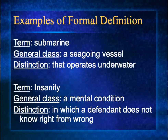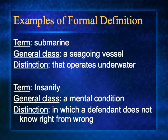Some examples of formal definition: the term is submarine, the class is a seagoing vessel, and the distinction is that it operates underwater. There's also the term insanity, which is a mental condition — that's its classification — but the distinction is that a defendant does not know right from wrong.